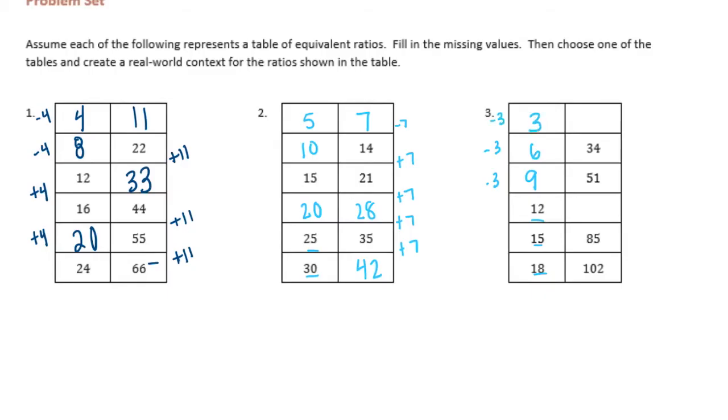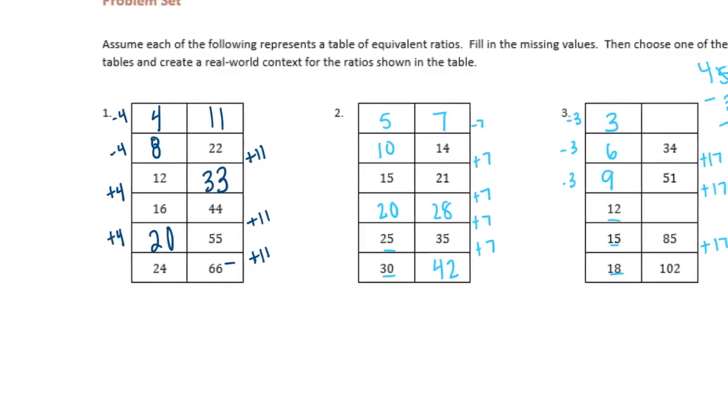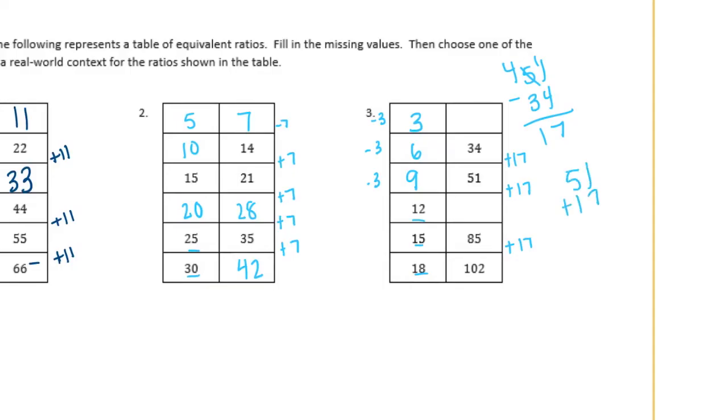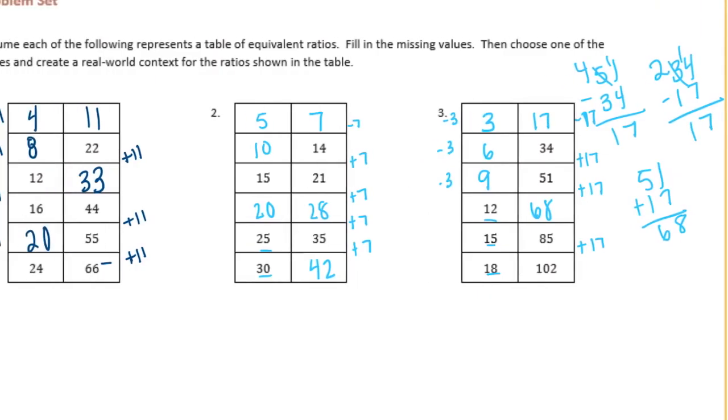And here we have 34, 51. So let's find the difference between 34 and 51. 17, and the difference between 85 and 102 is 17, too. So let's add 51 plus 17. It'll be 68, and then we have 34, so we're going to need to subtract 17 to figure out what comes before that. There's 17.